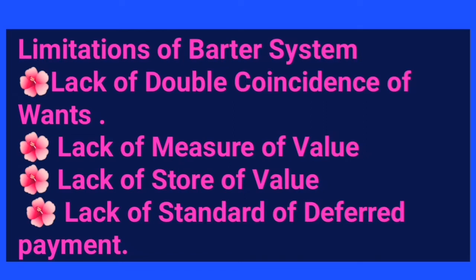These are the limitations of barter system. An important point is lack of double coincidence of wants. Double coincidence of wants means mutual needs are essential for barter system — and that is lacking. So this is one of the major drawbacks of barter system.